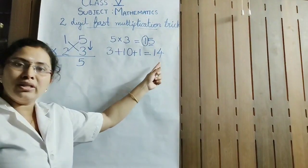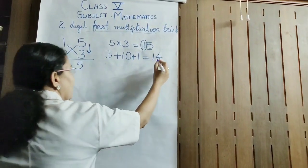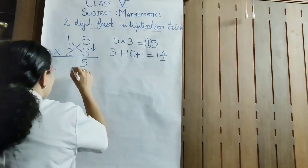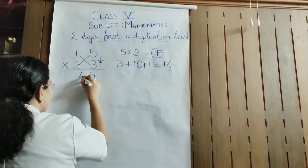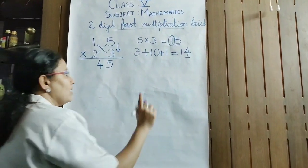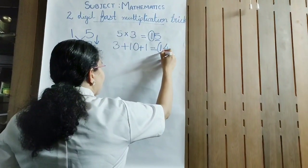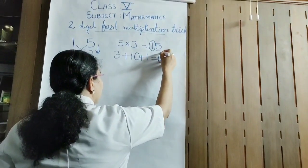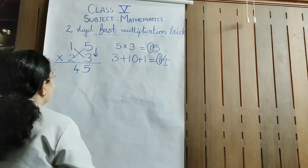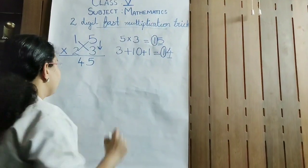So I got the number as 14. The units place number is 4, which I am going to write here. And here also you can see 1 carries, so we are moving on to the third step.